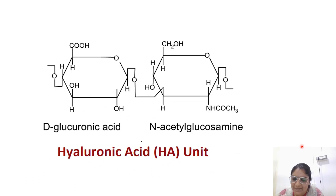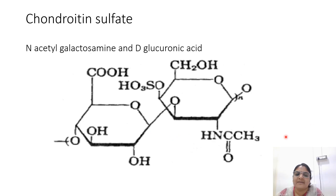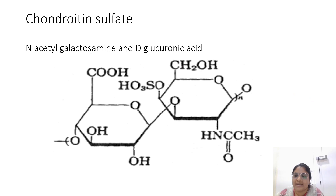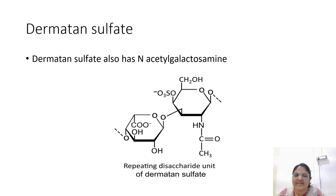To summarize: hyaluronic acid has D-glucuronic acid and N-acetylglucosamine; chondroitin sulfate has N-acetylgalactosamine and D-glucuronic acid; and dermatan sulfate has N-acetylgalactosamine.